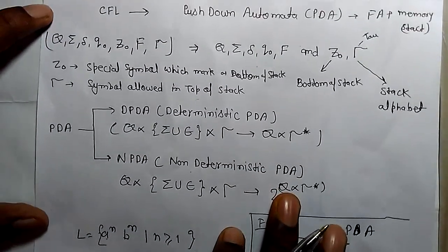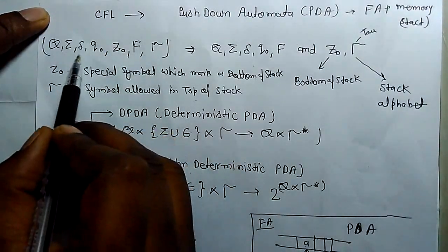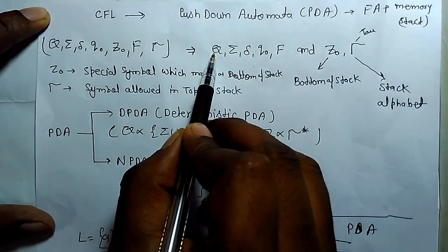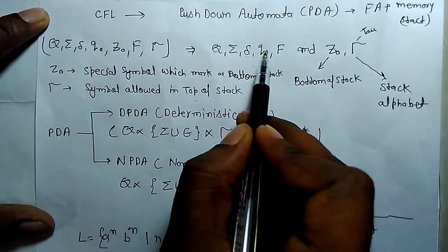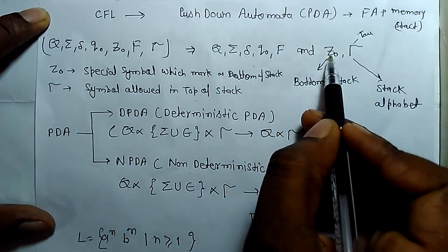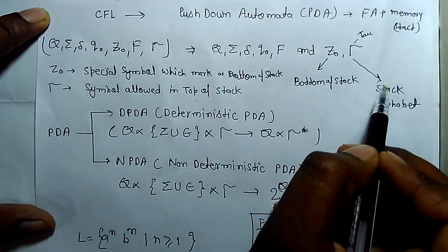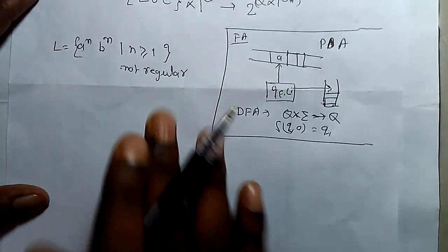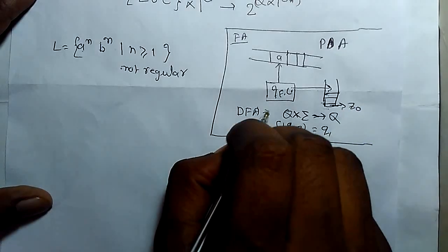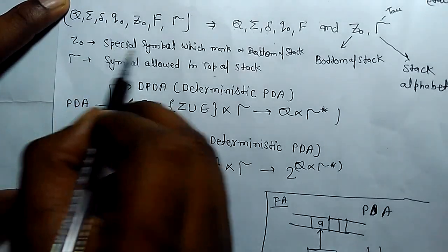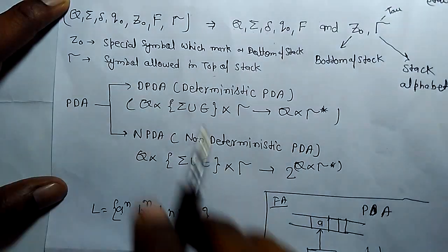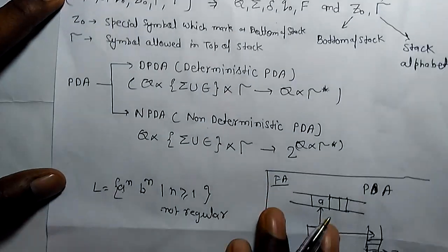Let's look at pushdown automata formally. There are 7 tuples in pushdown automata. Five of these tuples are the same as finite automata: Q is the finite set of states, Sigma is the input symbol, there is a transition function, a start state, and a set of final states. The additional memory part is the stack: Z0 is the bottom of the stack (a special symbol marking the bottom), and Tau is the stack alphabet — the symbols allowed on top of the stack.